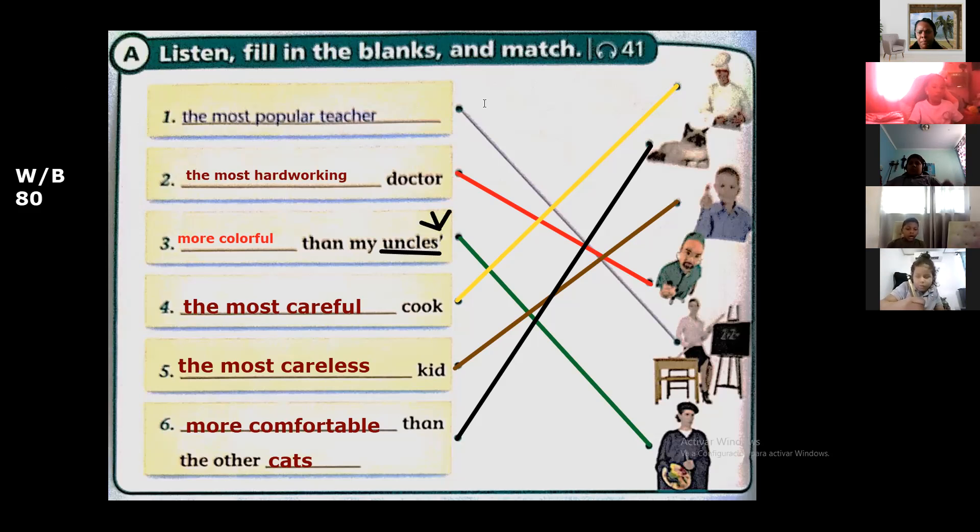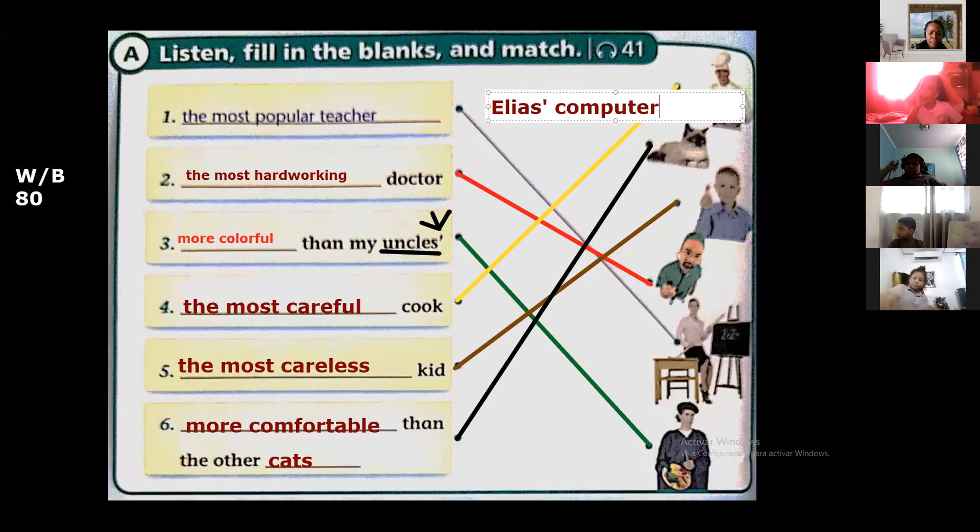Por ejemplo, si yo quiero escribir que Elías tiene una computadora, entonces yo diría Elías' computer. Right, what I say? Elías' computer. Miren cómo se escribe la computadora de Elías. You know why? Because the apostrophe